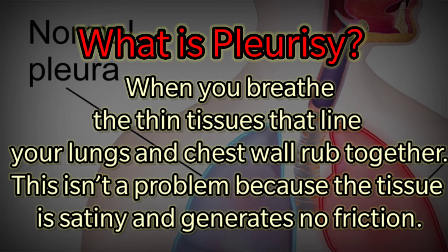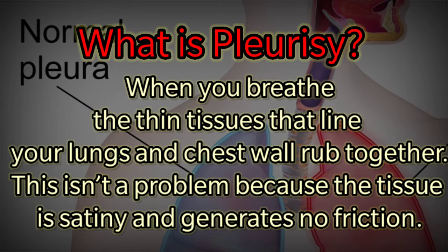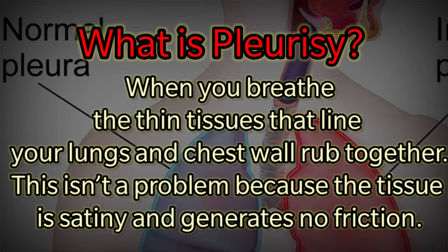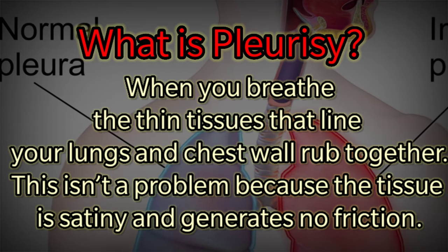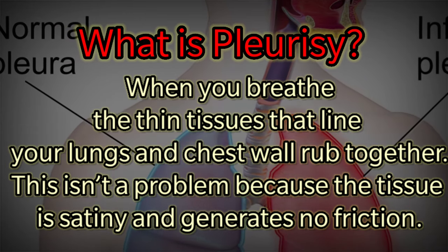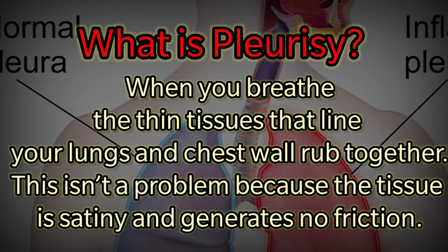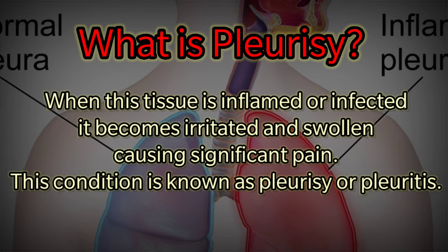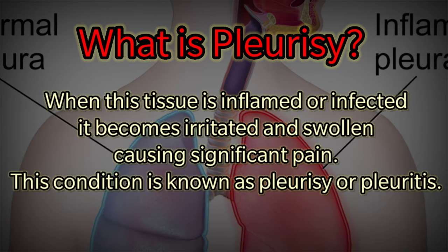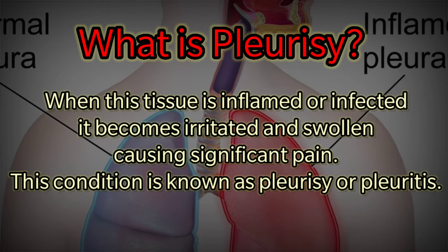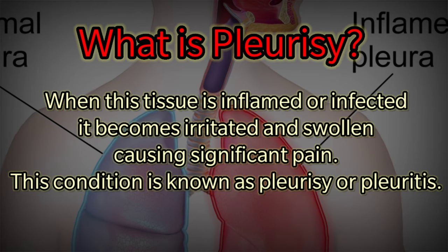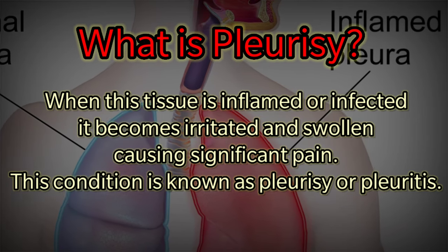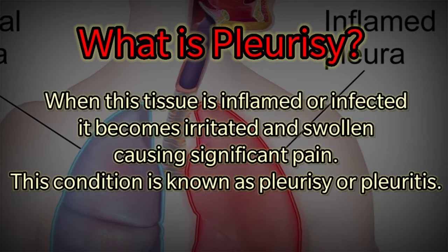What is pleurisy? When you breathe, the thin tissue that lines your lungs and chest wall, called the pleura, wraps together. Typically this is not a problem because the tissue is smooth and generates no friction. However, when this tissue is inflamed or infected, it becomes irritated and swollen, causing significant pain. This condition is known as pleurisy, or pleuritis.